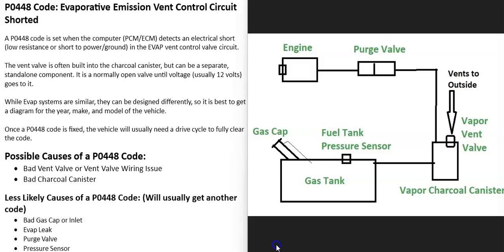Mainly the vent valve, so it's got to be troubleshot to know why. Depending on the vehicle there can be differences inside of an EVAP system - they can be designed differently. So if you go to work on an EVAP system it's always a good idea to get a diagram for that specific vehicle. The basics of how all these systems work is that the gas vapors leave the gas tank, go through a hose over to what's called a charcoal canister, which is kind of like storage for the gas vapors.